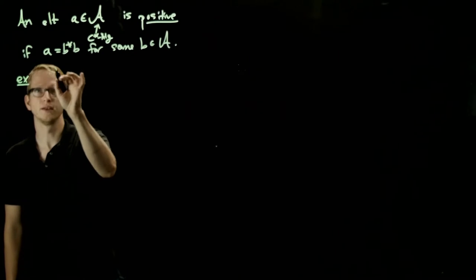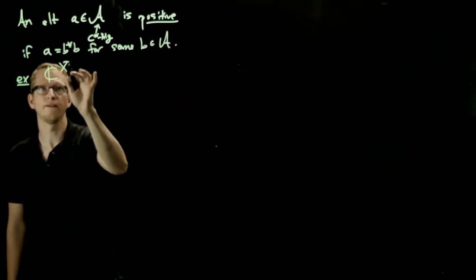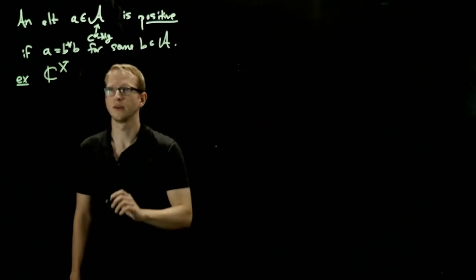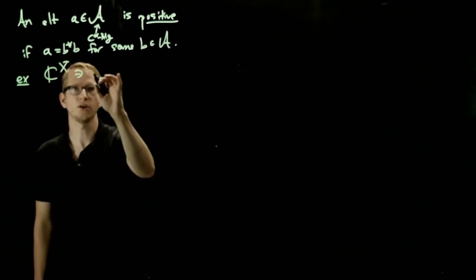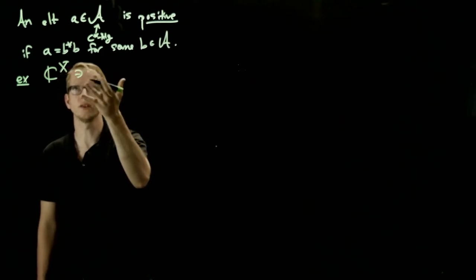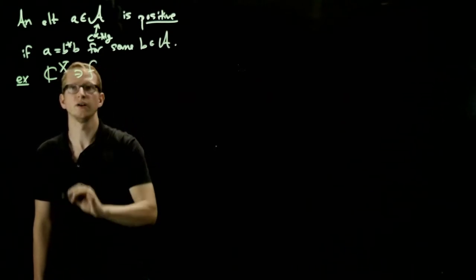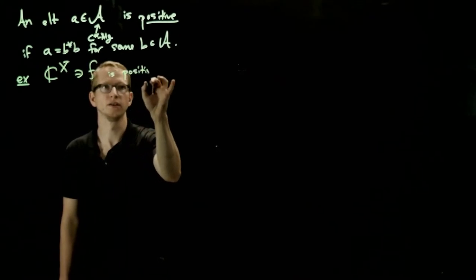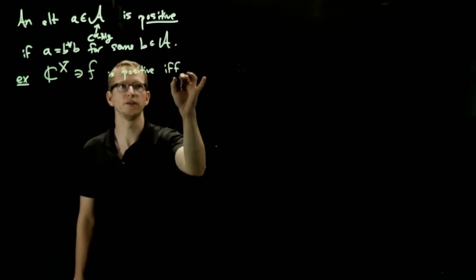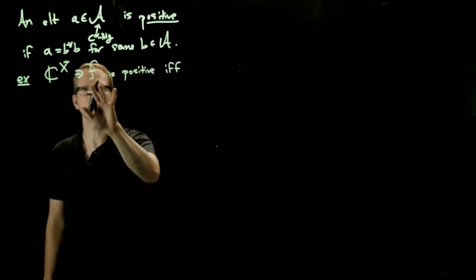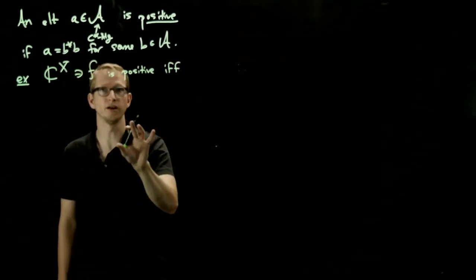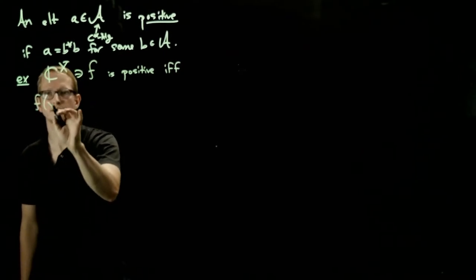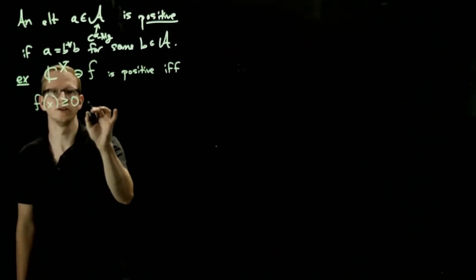So one example is, let's take functions from X to C. Now an element here, let's call it F because we think of these as functions on X, is positive if and only if F of X is positive for all X.